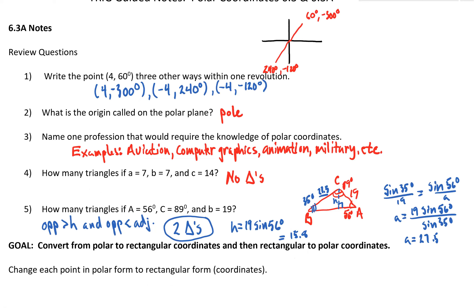Write the point three other ways: (4, -300), (-4, 240), or (-4, -120). What is the origin called in a polar plane? It's called the pole.